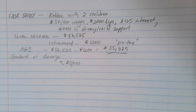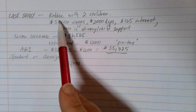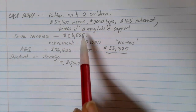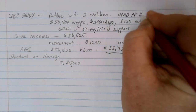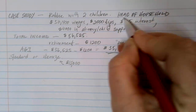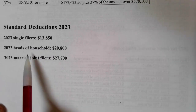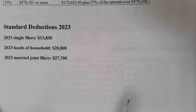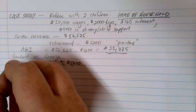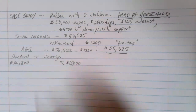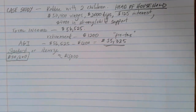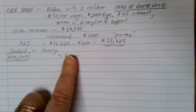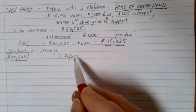The standard deduction depends on Robbie's filing status. Because Robbie is single with dependents, the filing status should be head of household. For the year 2023, heads of household can deduct twenty thousand eight hundred dollars. Since twenty thousand eight hundred is a better deduction than fifteen thousand, and you're only allowed one or the other, we're not going to take the itemized deduction in this case.